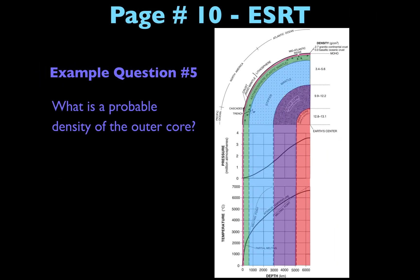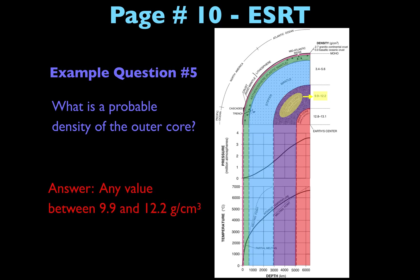One last question: what is a probable density of the outer core? Locate the outer core and look over to the density options — you can give any number between 9.9 and 12.2 grams per centimeter cubed. Just give one value within that range. If you have any questions using this page of the reference table, please do not hesitate to reach out.